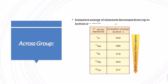Across the group, ionization energy decreases from top to bottom because atomic size increases and more electron shells are added to the atom. This creates shielding repulsion between the nucleus and the outermost electrons, making it easier to remove the electron from the outermost shell. Therefore, less energy is required to remove the electron going down a group.